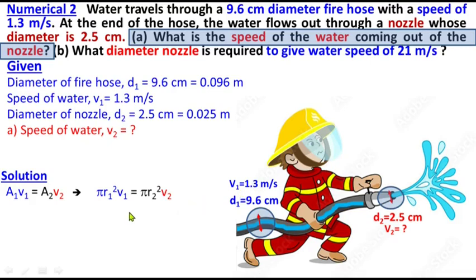The π terms cancel out, and solving for V₂ gives V₂ equals R₁²V₁ divided by R₂². To convert to diameter, since radius is diameter divided by 2, we substitute R₁ equals D₁/2 and R₂ equals D₂/2.